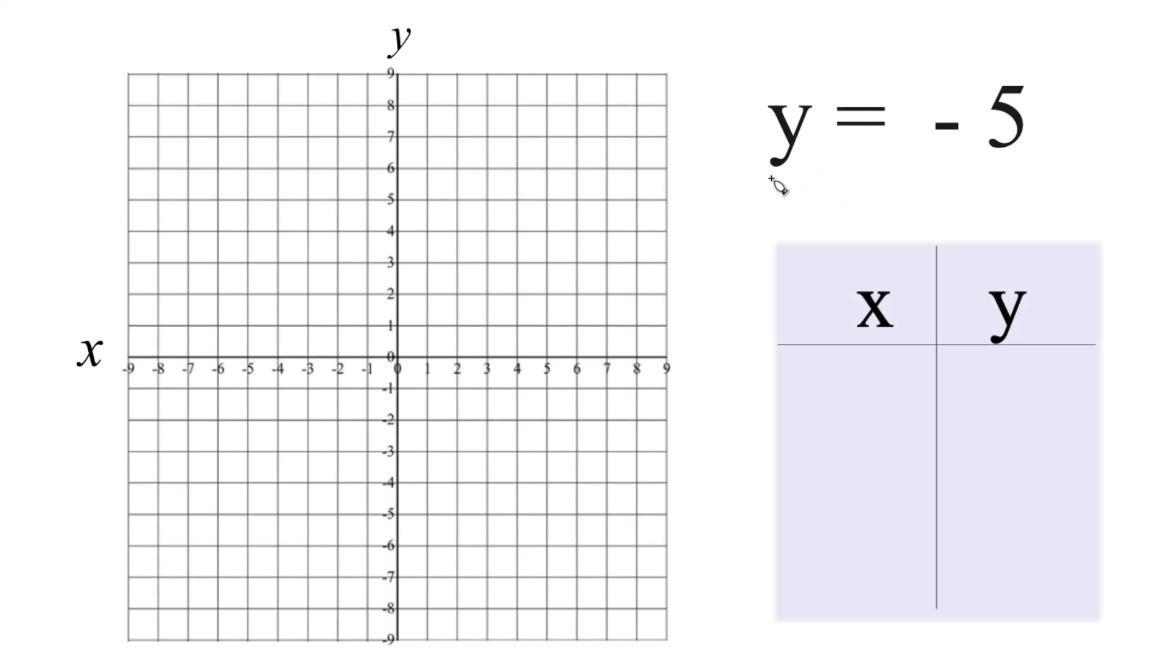Let's graph the linear equation y equals negative 5. We'll use a table of values to do this. So the thing is here, there's no x. You could think of it as y equals 0x minus 5 if you wanted to do that.